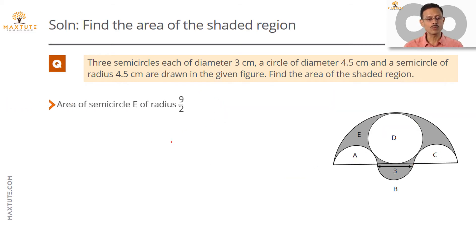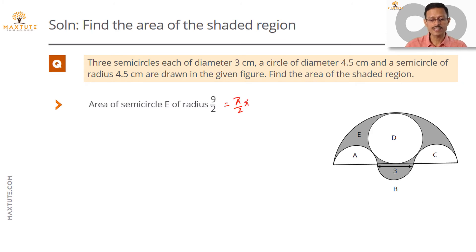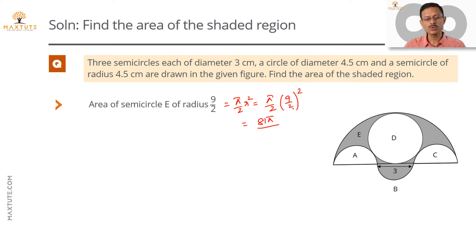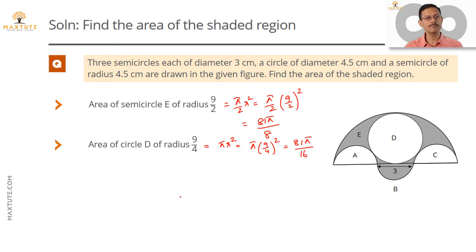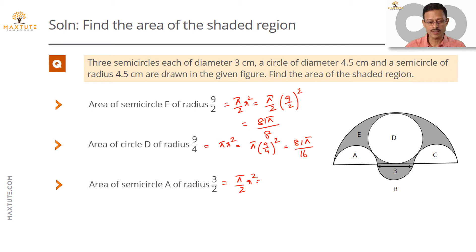Step 1: Area of semicircle E = (π/2) × (9/2)² = (π/2) × (81/4) = 81π/8. Step 2: Area of circle D with radius 9/4 = π × (9/4)² = 81π/16. Step 3: Area of semicircle A with radius 3/2 = (π/2) × (3/2)² = (π/2) × (9/4) = 9π/8.